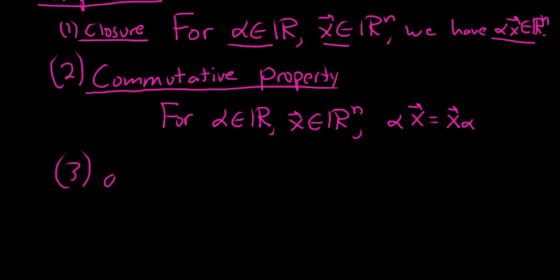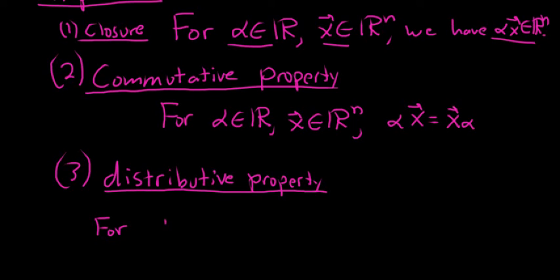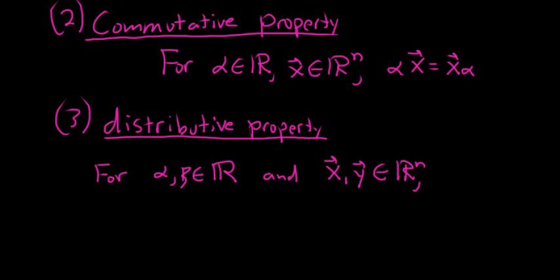Three: the distributive property. The distributive property basically says if you have two constants, for alpha and beta in the real numbers, and x and y vectors, then (alpha plus beta) times the vector x is just alpha x plus beta x.